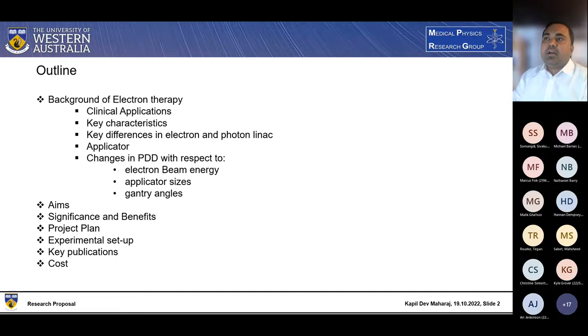In my today's talk, I'm going to talk about the background for electron therapy, which includes clinical applications, key characteristics, key differences in electron and photon lineage, applicator, changes in percentage depth dose with respect to electron beam energy, applicator size, gantry angles, and I'm going to discuss my aims, significance, and benefits of my project, project plan, experimental setup, publication, and in the end, a course.